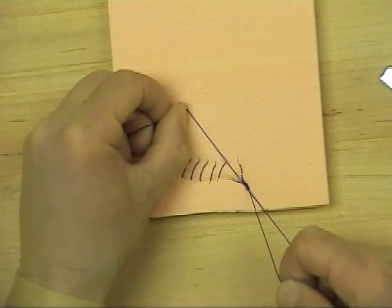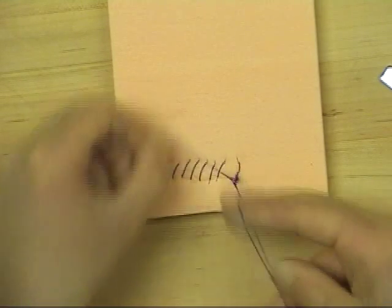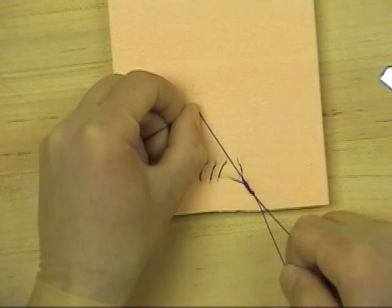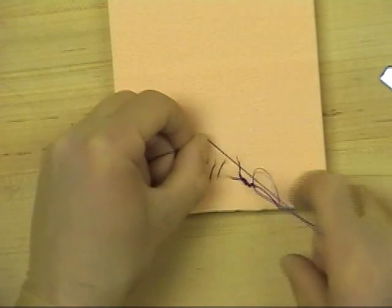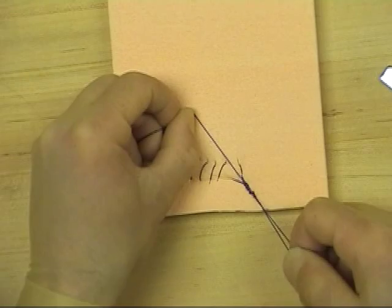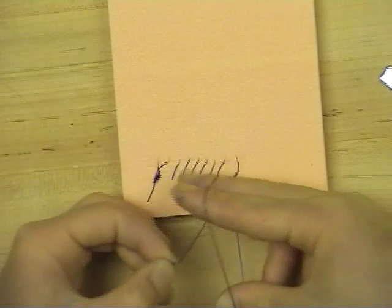The bite is again passed through the loop, forming another loop, with the previous one being tightened down as before. This maneuver is repeated at least six times.